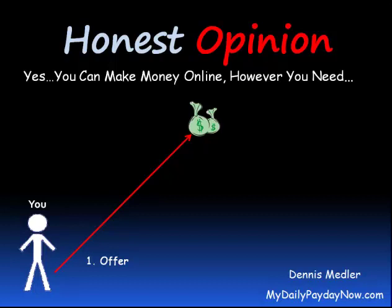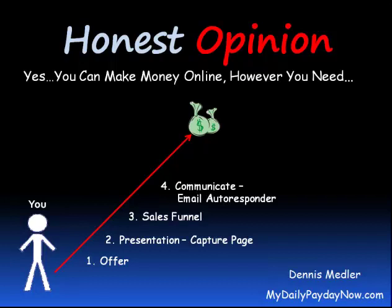Start with an offer — you must have a product or something to sell or give away. You need a presentation; this is your marketing, a capture page that allows you to capture email addresses and names. A sales funnel is comprised of the names and emails that you got in your capture page. Number four, communicate — now that you have names and emails in a sales funnel, you need an autoresponder to communicate with those that are on your list, those that opted in. We do this with a series of follow-up emails.